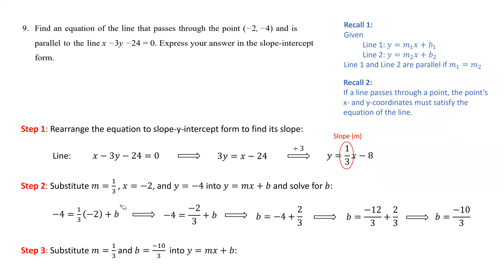Finally, we substitute the slope of one-third and the y-intercept of negative 10 over 3 into the equation y equals mx plus b. So the equation of the line we're looking for is y equals one-third times x minus 10 over 3. Thanks for watching.